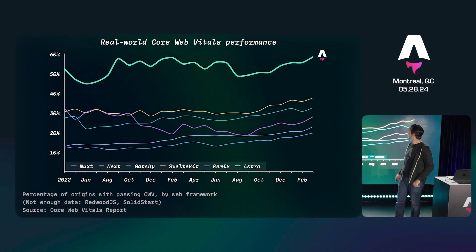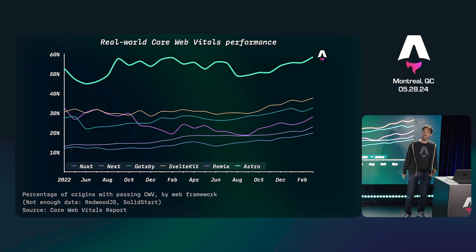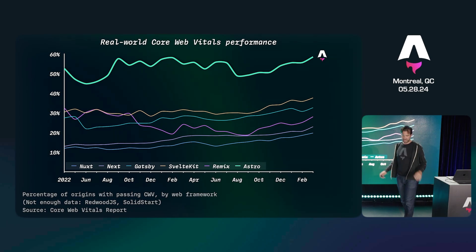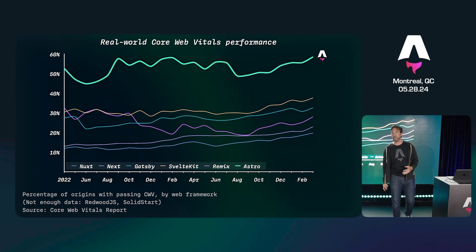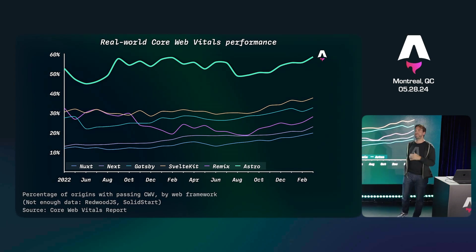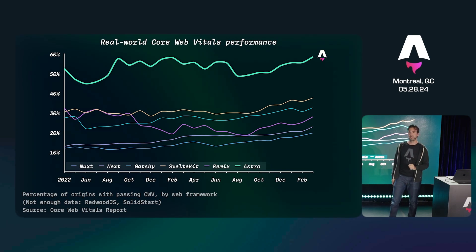We also care about performance. We are by far the best performing web framework. Core Web Vitals are super important for not just SEO, but conversion rates, bounce rates, and e-commerce sales. Every fraction of a second matters when you're building on the web.